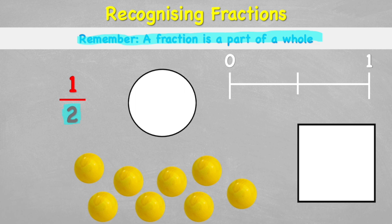Looking back at our apple, the denominator means we had our whole apple and cut it into two equal pieces. Then the number on the top — the numerator — tells us how many pieces we're looking at, so we're looking at this one piece here.